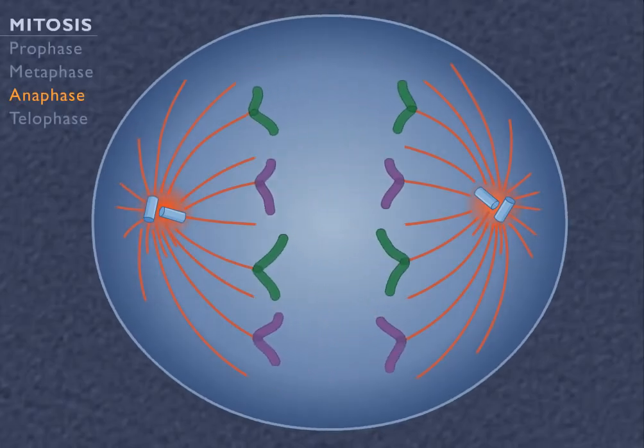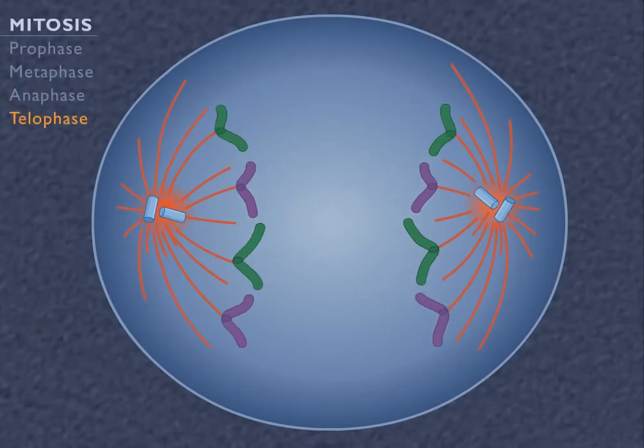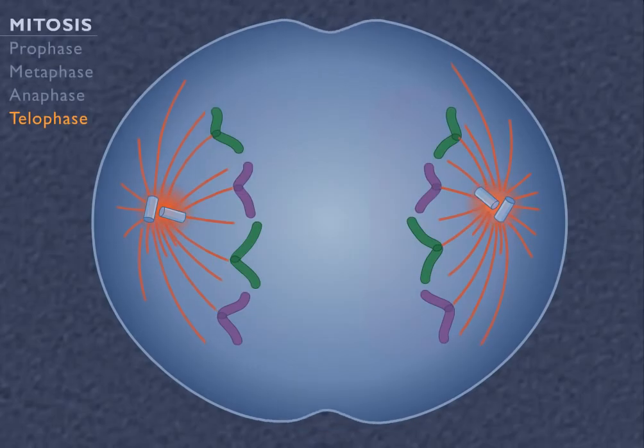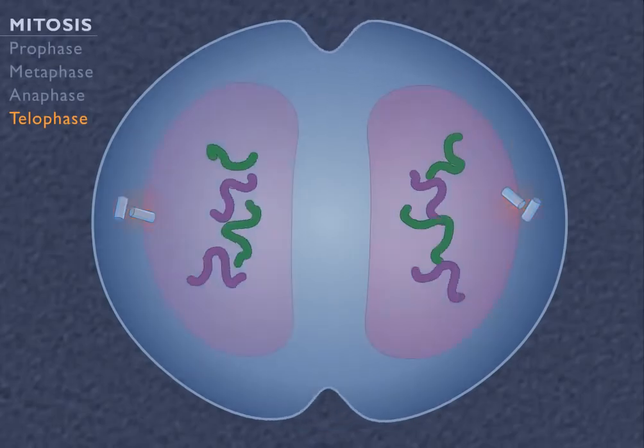In telophase, the two groups of chromosomes reach the opposite ends of the cell. As a new nuclear envelope starts to form around each group, the chromosomes uncoil and the spindle disappears.